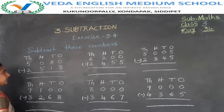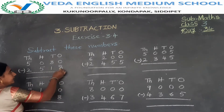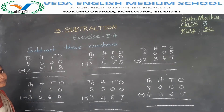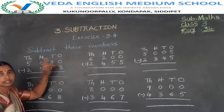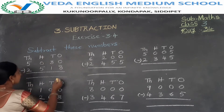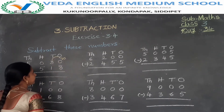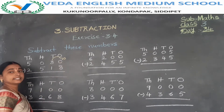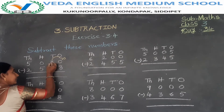0 minus 8 is not possible. The ones digit is greater than 0, so subtraction is not possible here. So what we do now is take a borrow from the 10th place to the 1st place.